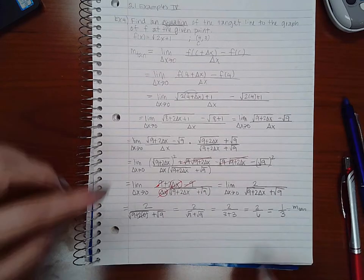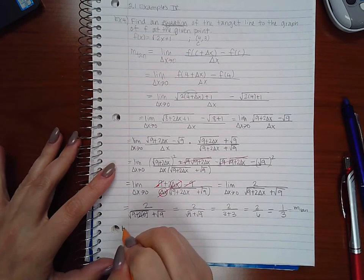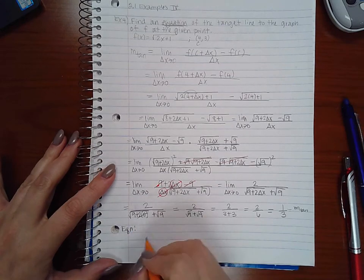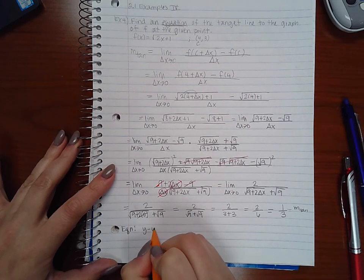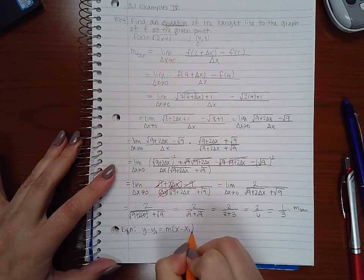And I was given a point at the very beginning, so now I can find the equation. It's going to be y minus y1 equal to m times x minus x1.